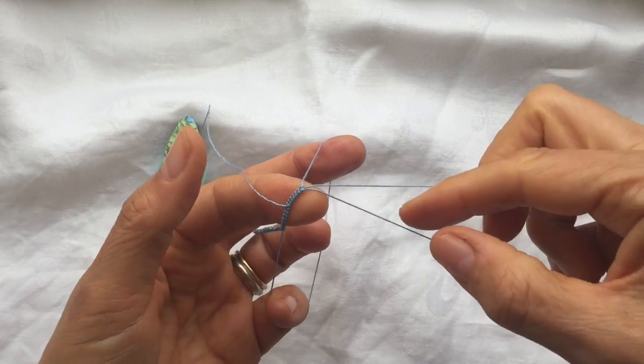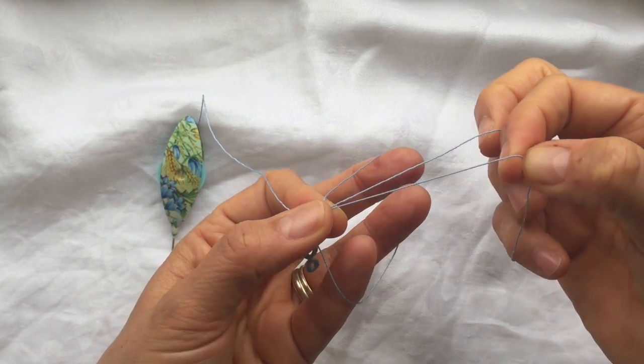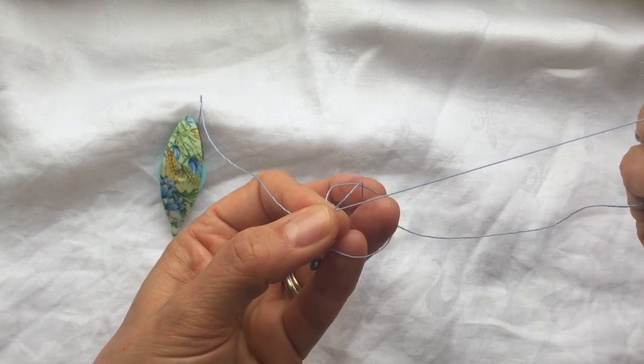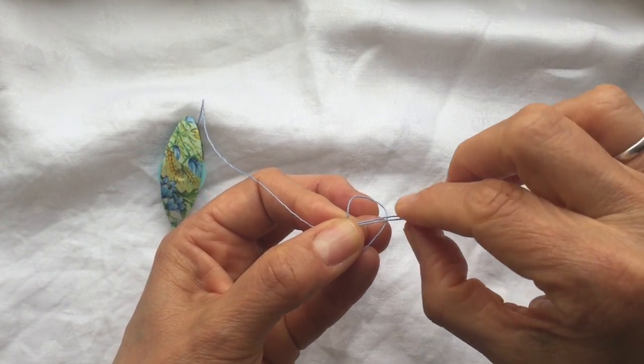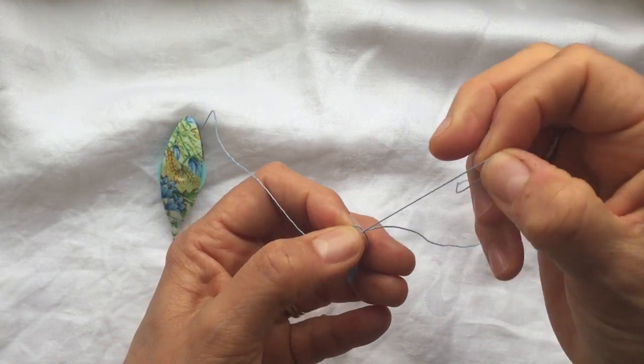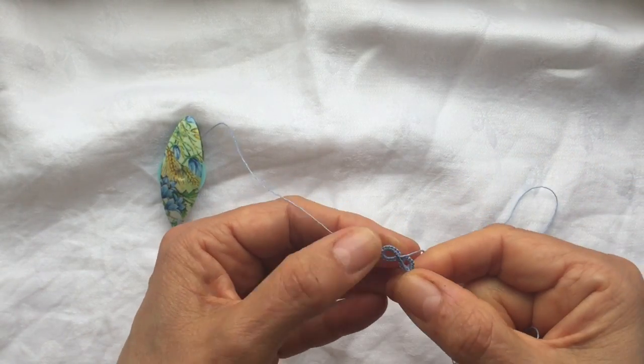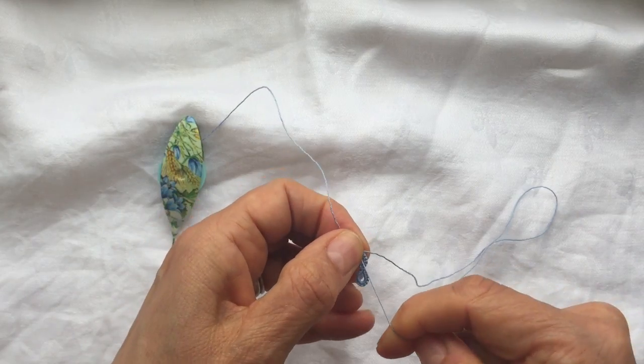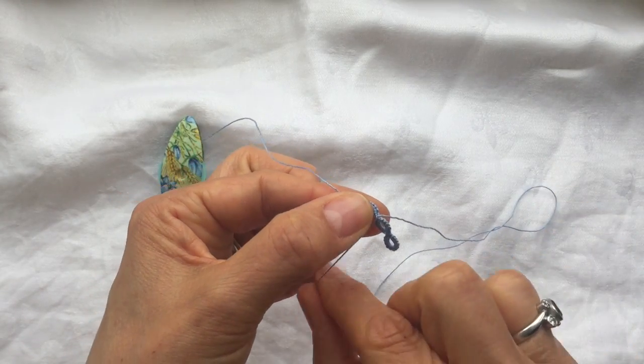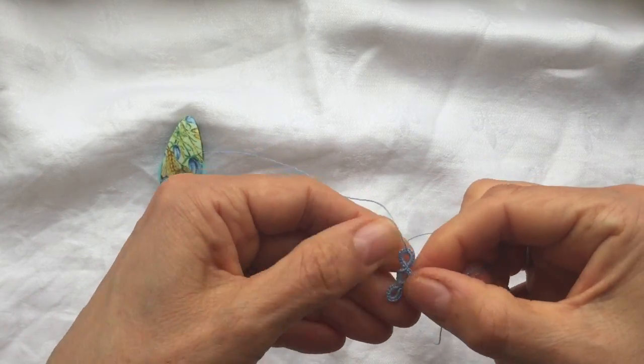And then find the side of the loop that closes the ring, like this. Keep pulling until your ring is closed, like that.